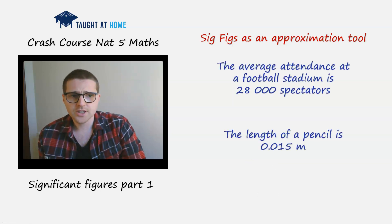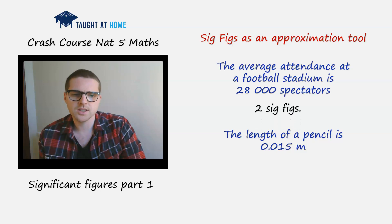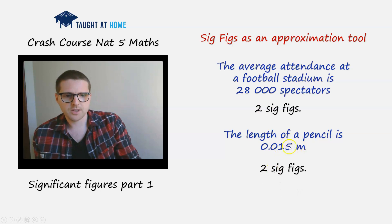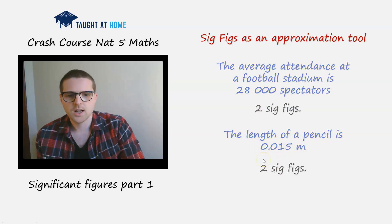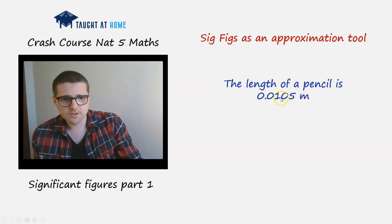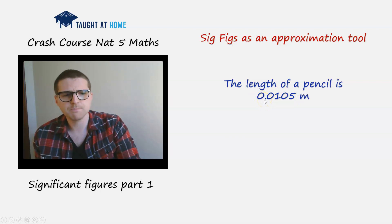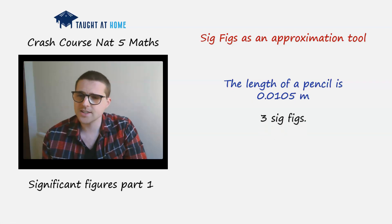The average attendance of a football stadium is 28,000 spectators — that's obviously approximate, so there are two significant figures. The length of a pencil is 0.015 metres — two significant figures, the two non-zero digits. If the length were 0.0105 metres, the zero in the middle is a significant figure, and the two leading zeros are non-significant, giving us three significant figures.